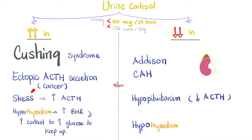High urine cortisol can also be caused by stress — too much stress increases ACTH, which increases cortisol secretion from the adrenal cortex. Or it could be hyperthyroidism: thyroid hormone raises the metabolic rate dramatically, so the body needs more energy and glucose — cortisol rises to provide it. Cortisol, glucagon, and thyroid hormone all act together in the fasting state; they are all anti-insulin. So it makes sense that thyroid hormone and cortisol rise together.